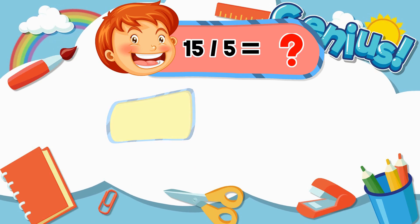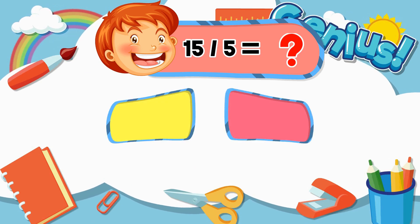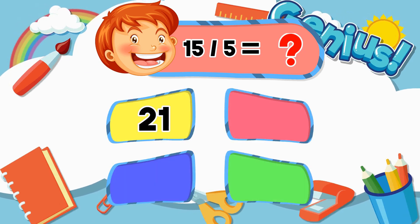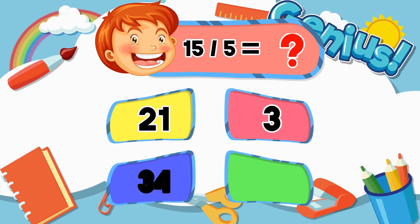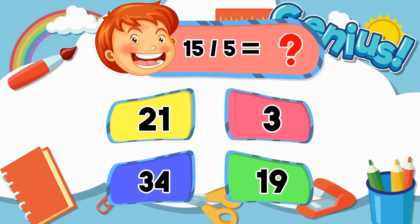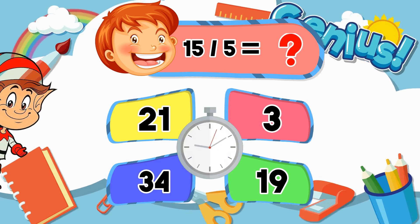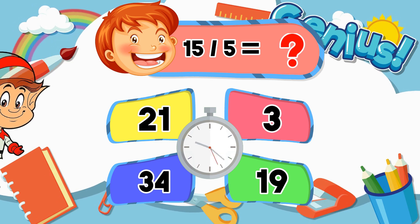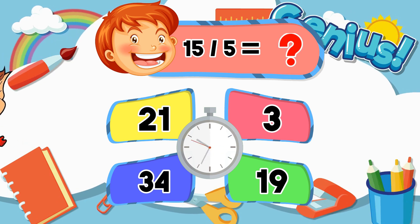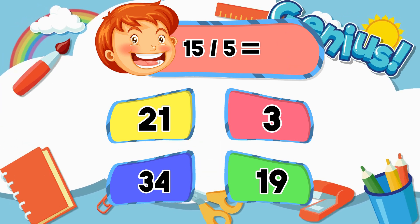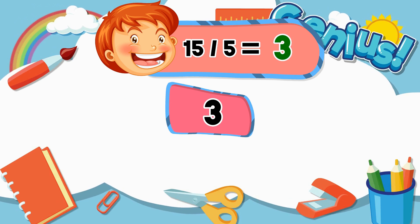What is 15 divided by 5? 21, 3, 34, 19. Answer: 3.